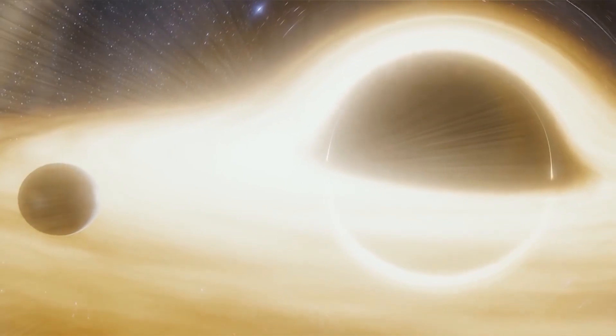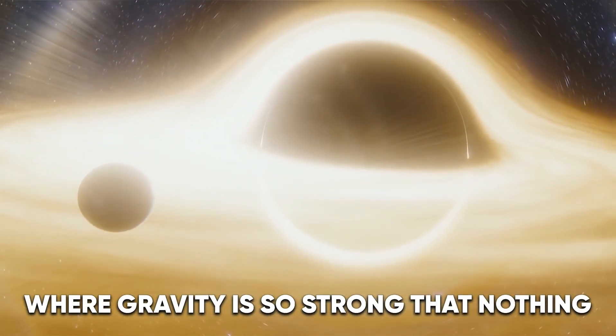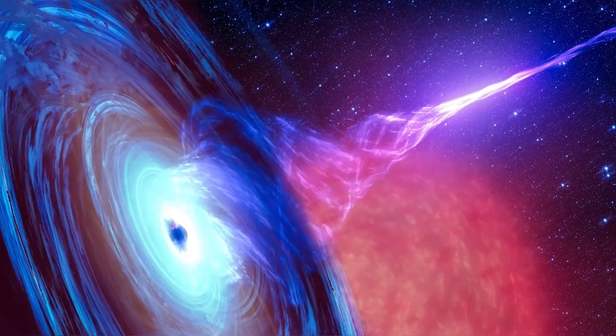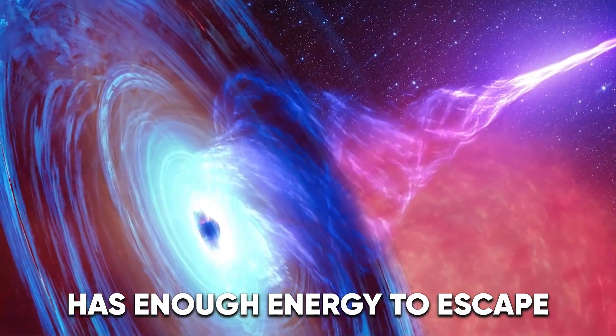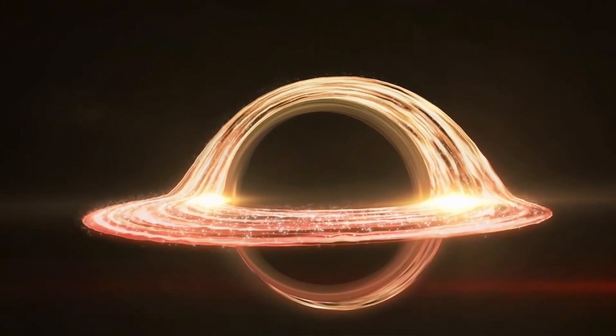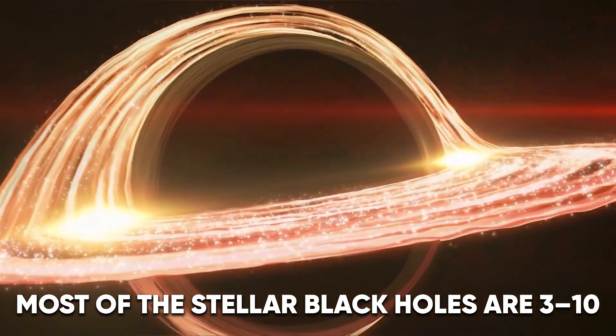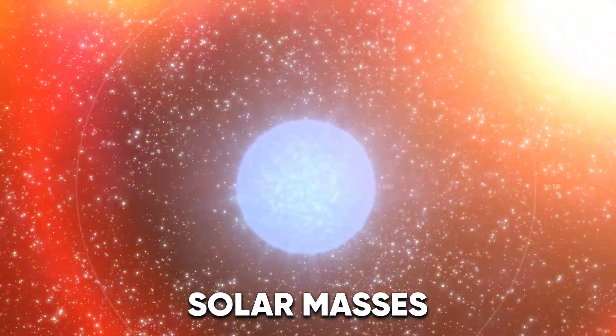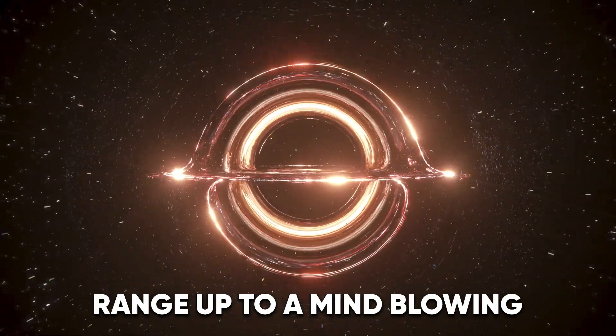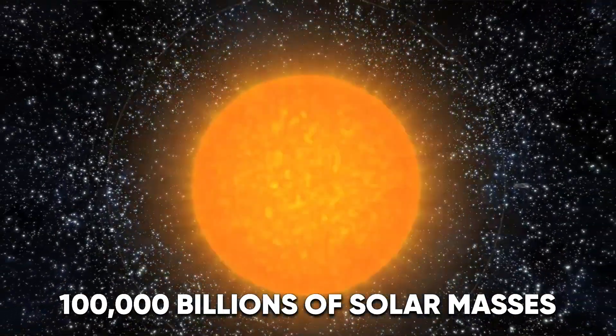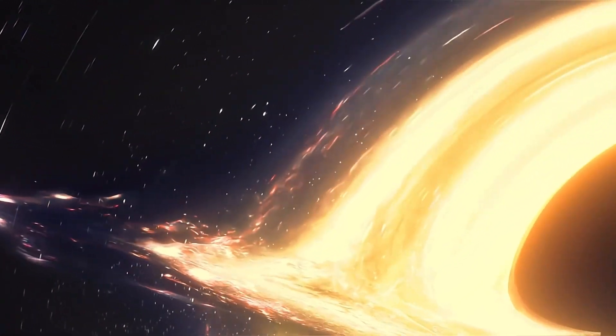Black holes, in simpler terms, are regions in spacetime where gravity is so strong that nothing, not even light or other electromagnetic waves, has enough energy to escape. The black hole gathers mass as it devours anything in its path. Most of the stellar black holes are 3 to 10 solar masses, while there are supermassive black holes out there that can range up to a mind-blowing 100 billion solar masses. That's how massive black holes can be.